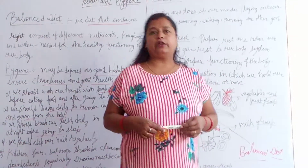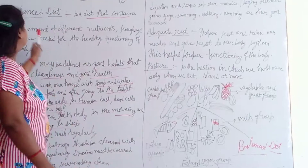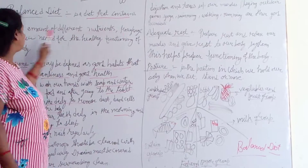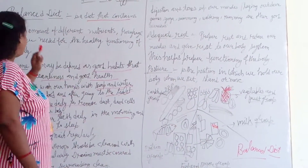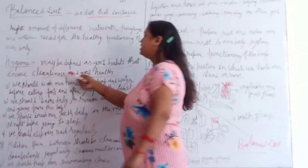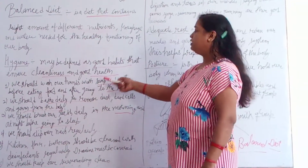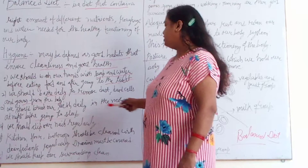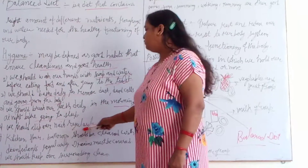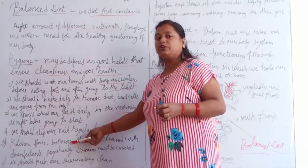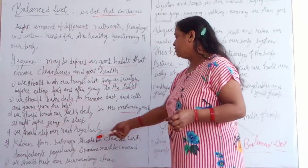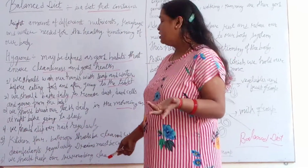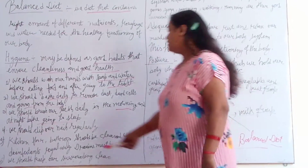To summarize: a balanced diet is a diet that contains the right amount of different nutrients — roughage and water — needed for the healthy functioning of your body. Hygiene means good habits; your surroundings should be neat and clean. Bathe daily, wash your hands with soap and water, brush your teeth daily in the morning and before sleep, clip your nails regularly, and keep your kitchen floor, washrooms, and bathroom disinfected with drains covered.